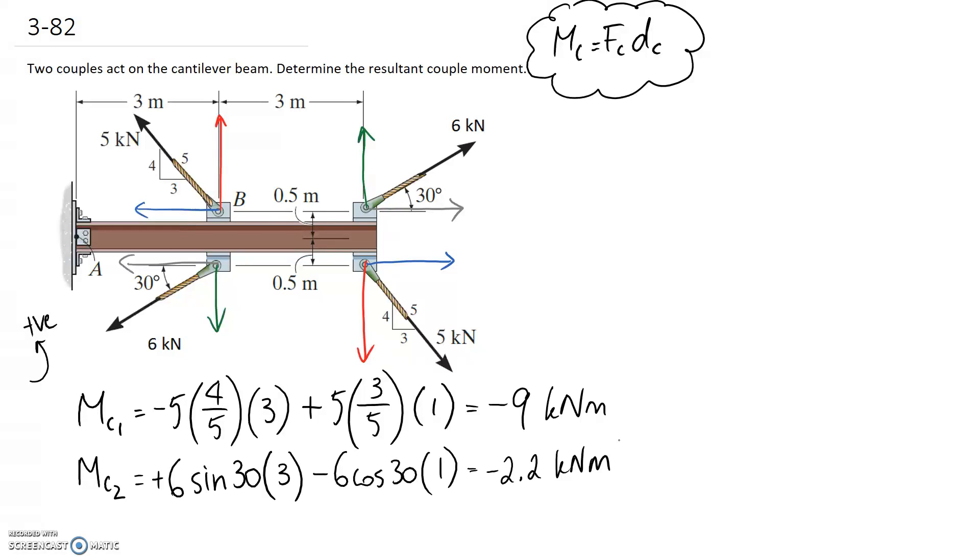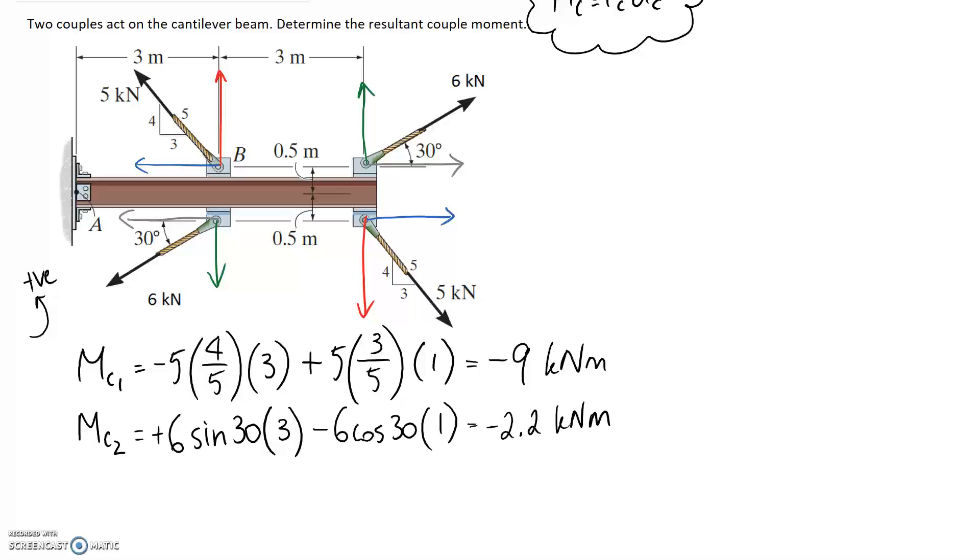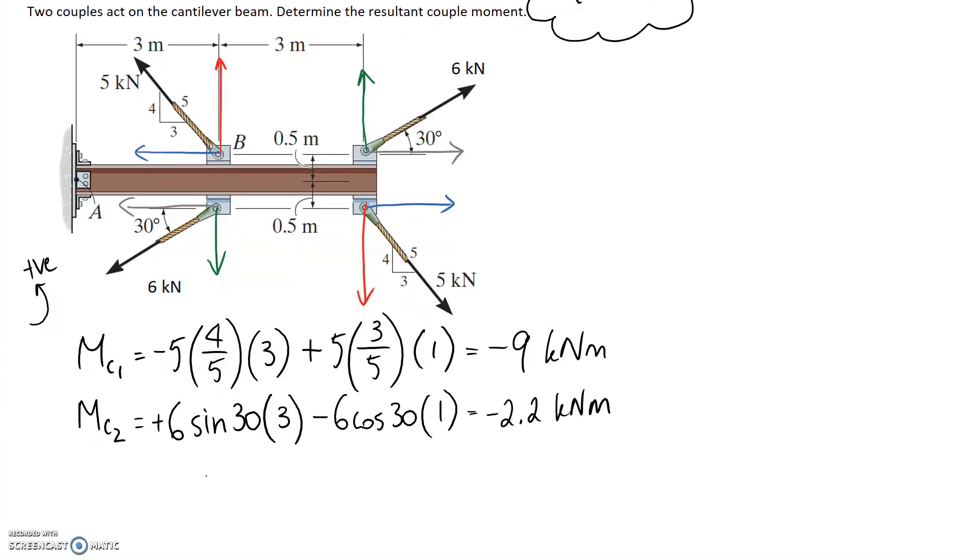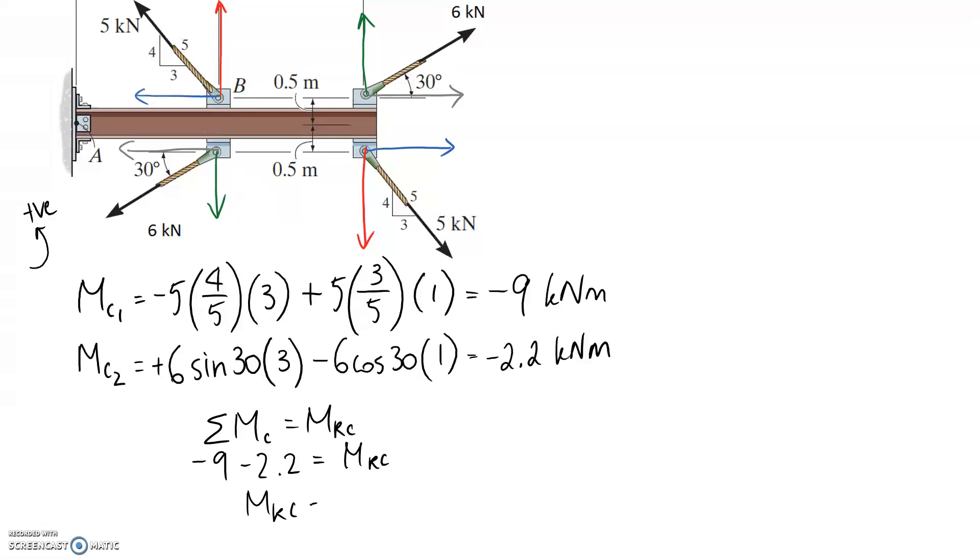So all that's left is to determine the resultant of both of these together, so it's just going to be a case of adding them. If you want an equation to apply, you could say that the sum of the couples, let's call them MC, is equal to the resultant couple, MRC. And it's just going to be then these two added together, so negative 9 take 2.2, and it ends up being negative 11.2 kilonewton meters. The negative is just telling you that it's going to be in the clockwise direction, so this here is the answer.